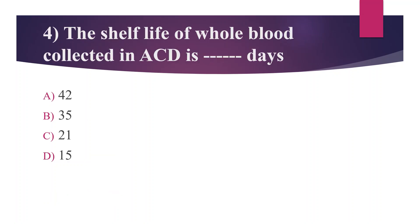Fourth question: The shelf life of whole blood collected in ACD is how many days — Option A: 42 days, Option B: 35 days, Option C: 21 days, Option D: 15 days. Answer is Option C, 21 days. ACD — acid citrate dextrose solution — has a shelf life of 21 days. CPD, citrate phosphate dextrose, also has 21 days.